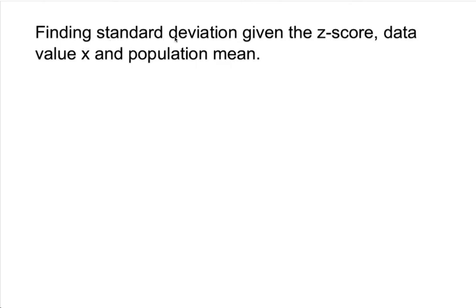Let's learn how to find the standard deviation given the z-score, data value x, and the population mean. We can actually find two approaches. Since z-score is given, I'll talk about z-score. We have a standard formula for z-score, but we can be lucky if the standard deviation formula is given — it depends on your instructor, professor, or teacher.